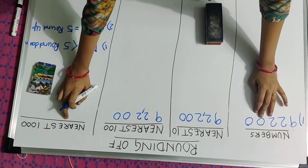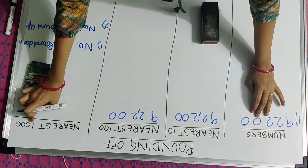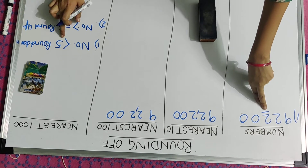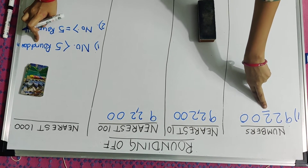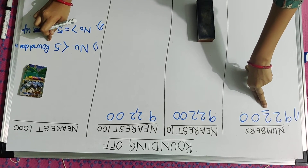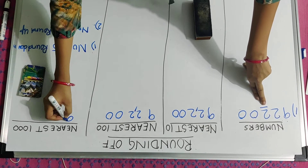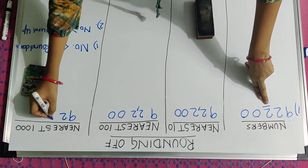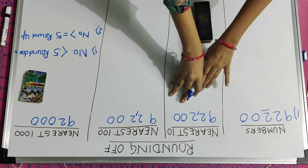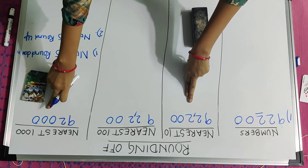My third activity is to round the number to its nearest 1,000. To round any number to its nearest 1,000, I have to check its 100's place. Here also 2 is less than 5, so I will apply rule number 1, that is round down. There will be no change in its 1,000's place. So in this way you can round the number to its nearest 10, to its nearest 100, and to its nearest 1,000.